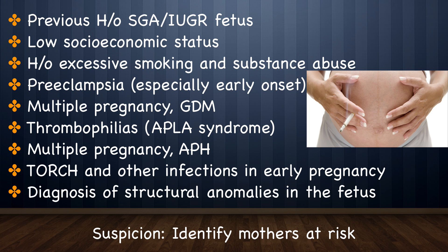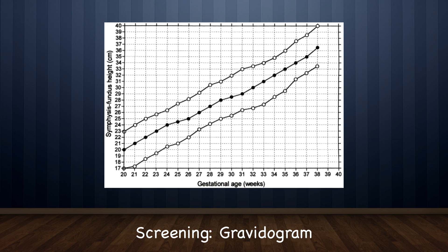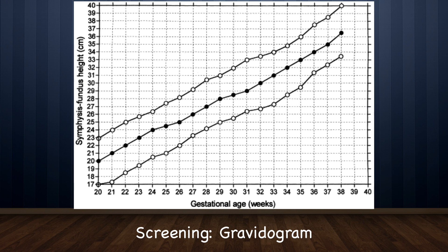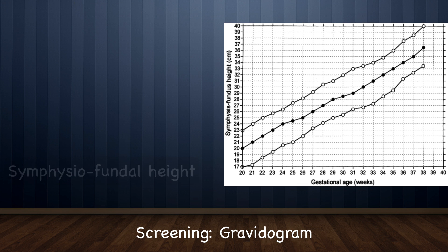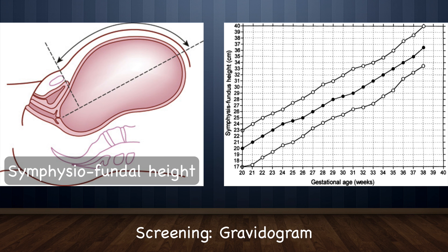Gravidogram — that is, serial measurement and plotting of symphysio-fundal height versus gestational age in weeks — is a simple, inexpensive, and sensitive screening test for detection of IUGR. Its routine use cannot be overemphasized. As an approximation, symphysio-fundal height increases by about one centimeter per week between 14 and 32 weeks. A lag of four centimeters or more certainly suggests growth restriction and should be subjected to ultrasonography to establish the diagnosis. Ideally, normal growth charts should be constructed for Indian and other populations, as these parameters are population-specific. A gravidogram must be derived for the 10th, 50th, and 90th centiles.